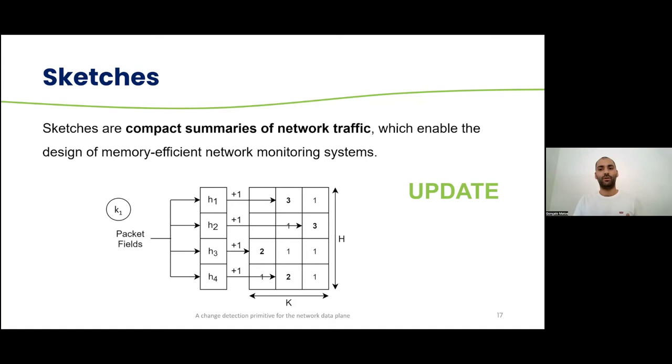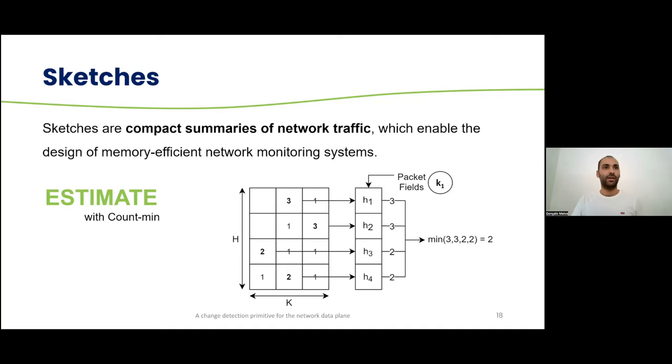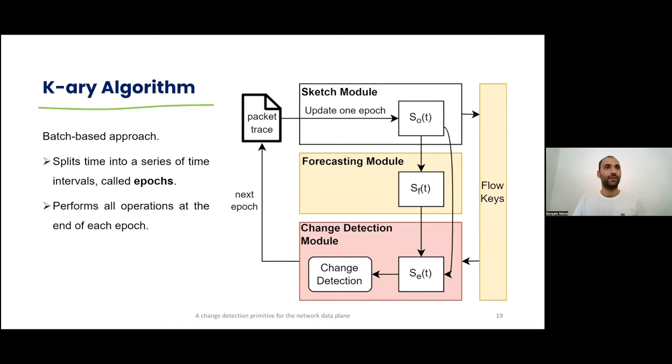But we also want to use these values, and so we want to estimate the values for each given key. And for this, I'm going to use a very simple sketch, that is the count mean sketch. And for this, it takes a key, for example, K1, and it hashes it again against the sketch to retrieve the values hashed by it. Then it chooses the minimum value. In this case, it's two, and you can see that K1 appeared two times in the network, so it is correct.